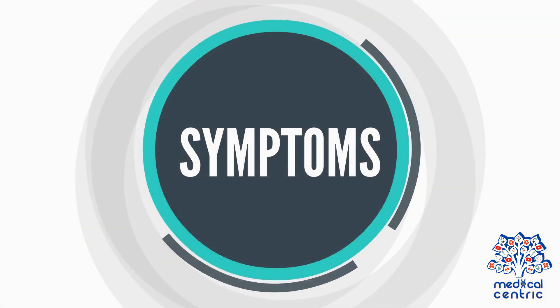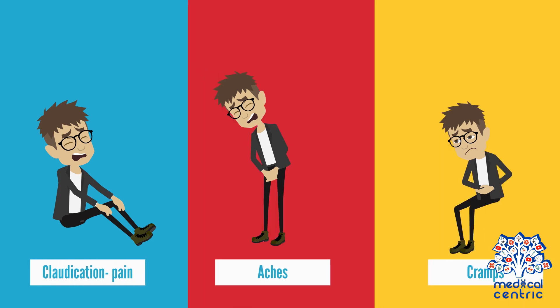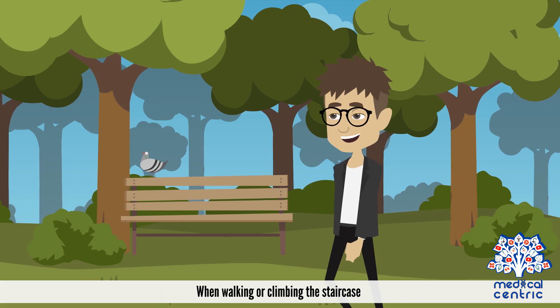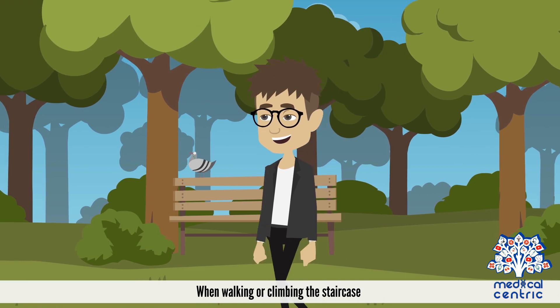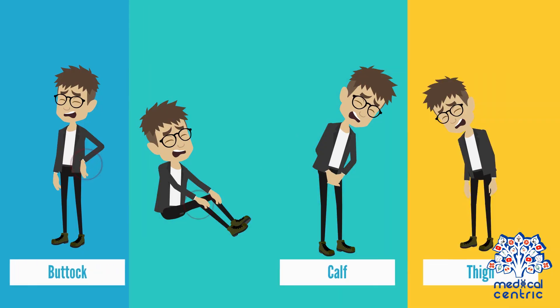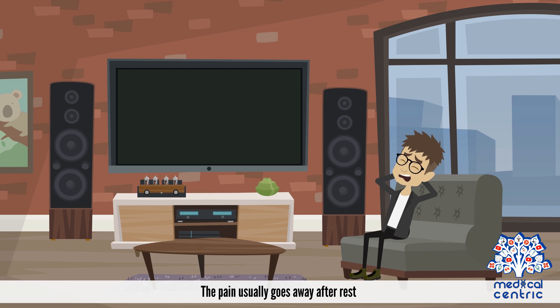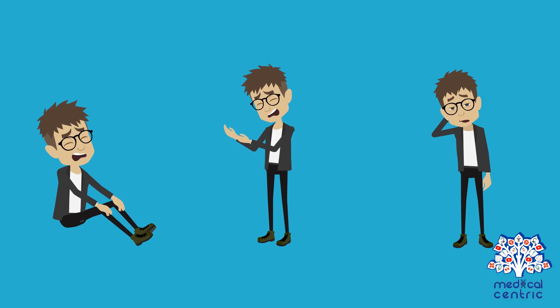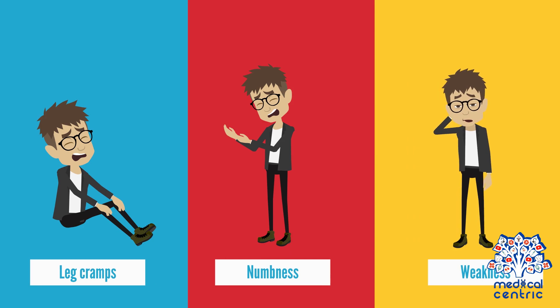Symptoms include claudication — pain, aches, or cramps when walking or climbing stairs. Pain might occur in the buttocks, calf, thigh, and hip, and usually goes away after rest. Other symptoms include leg cramps, numbness, or weakness.